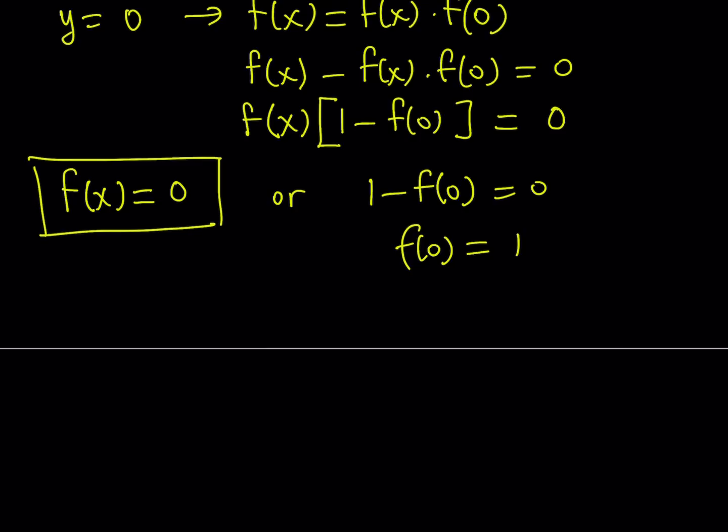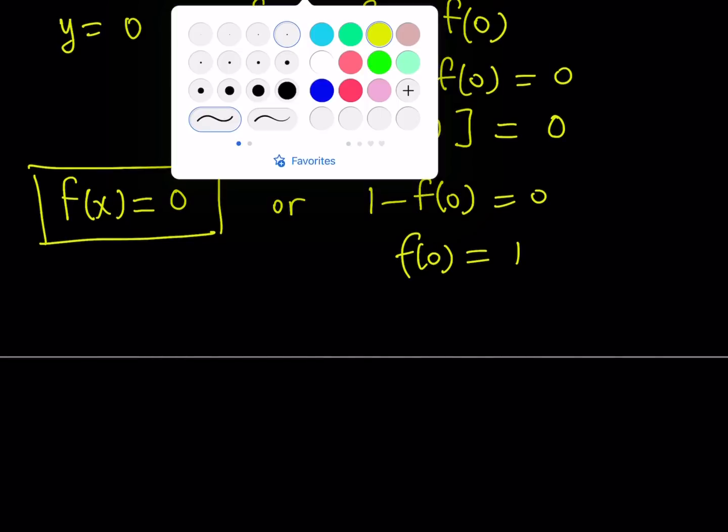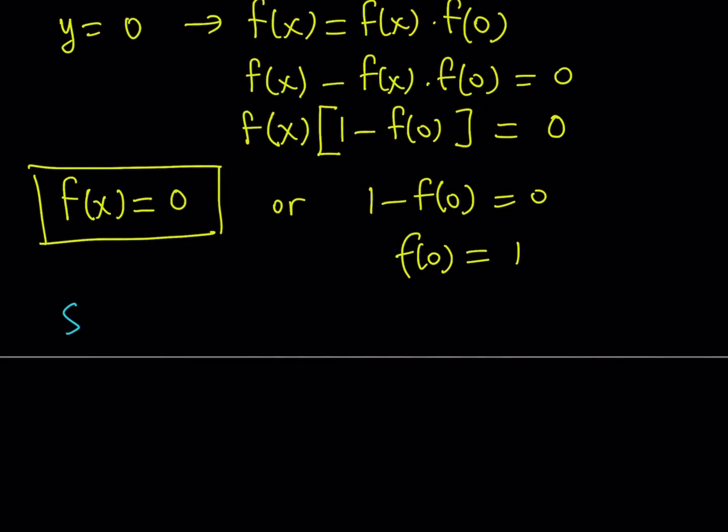Here's what we're going to do to make sure that we are always getting f of 0 equals 1. I'm going to suppose that f of x does not equal 0. We know that f of x equals 0 is a solution we got it out of the way but right now suppose that f of x does not equal 0, what does that imply? Then we have to have f of 0 equals 1 because one of these had to happen.